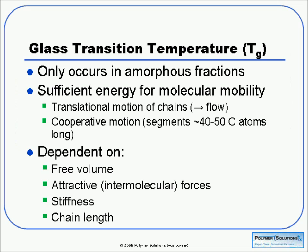Focusing on the amorphous areas, the most prevalent transition we discuss is the glass transition, or Tg. That's something that occurs only in amorphous areas. It happens when you put in enough energy to impart mobility to the chain — either translational motion (flow of the polymer) or segmental motion of maybe 40 to 50 carbon atoms along the backbone. The temperature at which this occurs depends on variables like free volume, attractive intermolecular forces such as hydrogen bonding, backbone stiffness, and chain length or molecular weight. For our purposes, putting energy into samples basically means heating them up.